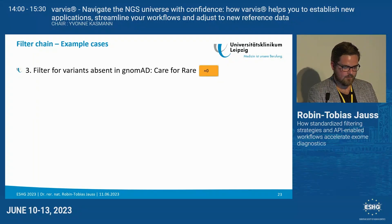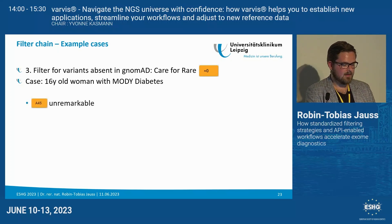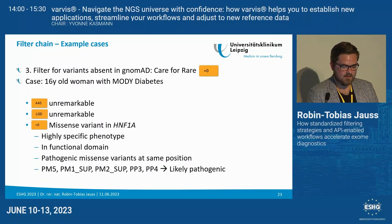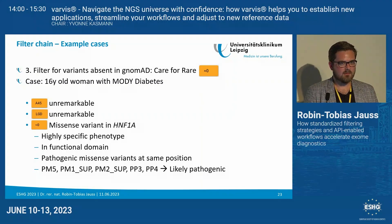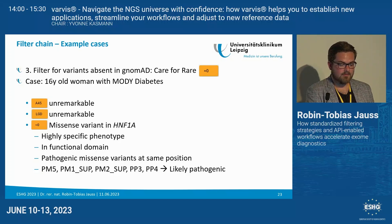Looking at variants absent from gnomAD, we had a case with a 16-year-old woman with suspected MODY diabetes. No pathogenic variants were identified before, no null variants, no frameshift or stop-gain variants. But in HNF1A we identified a variant with very specific phenotypic overlap causing MODY diabetes. The variant is in the functional domain, and pathogenic missense variants have been described at the same position. Again, a case solved in just three filtering steps.